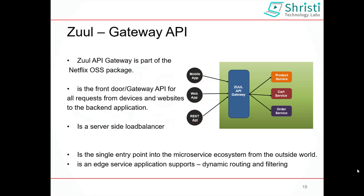In this video let us learn about Zuul. Zuul is a part of the Netflix OSS library. It is a gateway API that connects all requests coming from the client — whether it is a mobile app, a web app, or a REST API — to the backend microservice ecosystem. It acts as a single point of entry from the client side to the backend microservice ecosystem. Zuul also acts as a server side load balancer and supports dynamic routing and filtering. It has a set of predefined filters to route clients to the appropriate services.